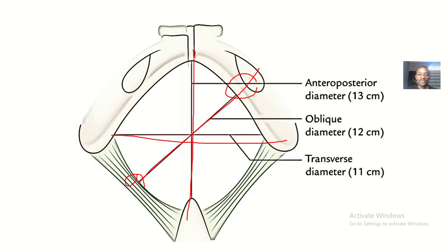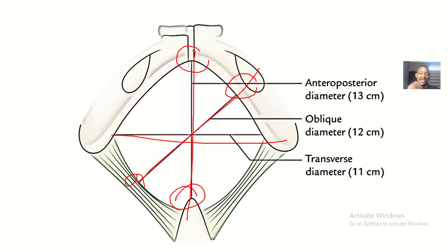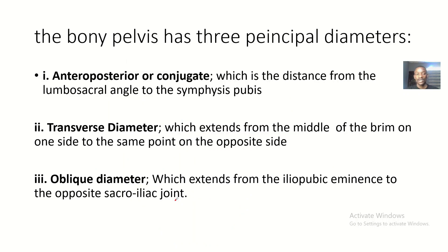The anterior-posterior measurement is from the lumbosacral joint to the pubic symphysis. So going by this, we'll be talking about these diameters of the bony pelvis, and that's basically what we'll be talking about today.